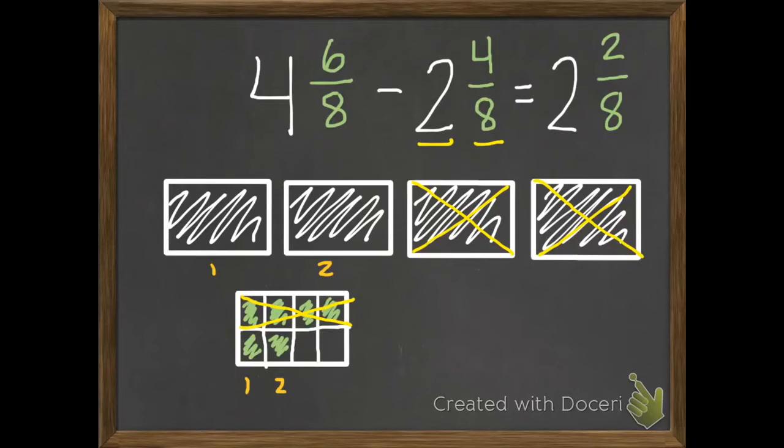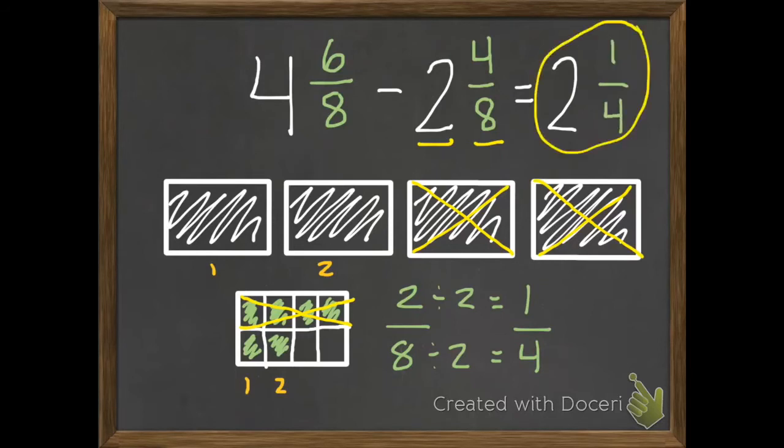This chapter we always and forever want to make sure we simplify our fractions. So 2 eighths we can simplify. We can divide them each by 2. So that equals 1 fourth. So our answer is 2 and 1 fourth.